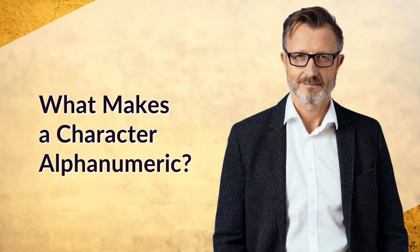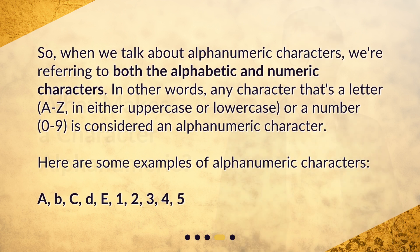What makes a character alphanumeric? When we talk about alphanumeric characters, we're referring to both the alphabetic and numeric characters. In other words, any character that's a letter, A to Z, in either uppercase or lowercase, or a number, 0 to 9, is considered an alphanumeric character. Here are some examples of alphanumeric characters: A, B, C, D, E, 1, 2, 3, 4, 5.